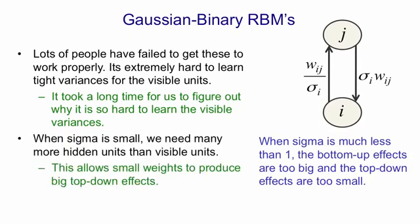So the solution is to have many more hidden units than visible units. That allows small weights between the visible and hidden units to have big top-down effects because there are so many hidden units.